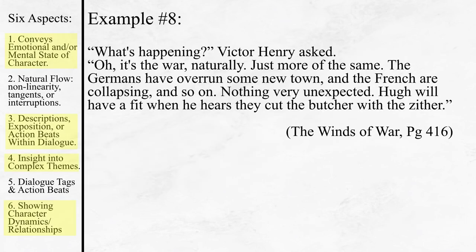"What's happening?" Victor Henry asked. "Oh, it's the war, naturally. Just more of the same. The Germans have overrun some new town, and the French are collapsing, and so on. Nothing very unexpected. He will have a fit when he hears they cut the butcher with the zither." This chunk of dialogue struck me as quite elegant, as it's not just providing the reader with exposition about what's happening in the war, but it's showing us a major theme in The Winds of War: how people are quite detached from conflicts outside of their own, by showing us this character ever so casually mentioning the death of thousands and the falling of a nation, before expressing concern over how they cut the butcher with the zither — some trivial inconvenience.